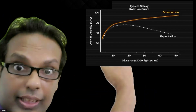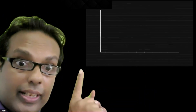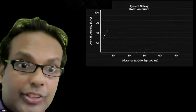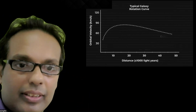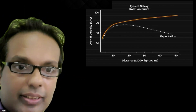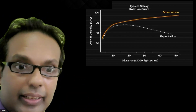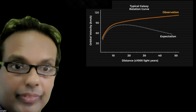This is what it looked like. There is another method called gravitational lensing, but today I am going to concentrate on the galactic orbital speed curve.